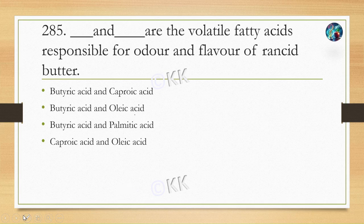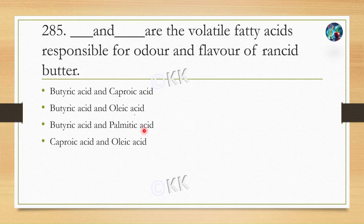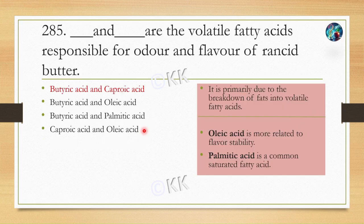Next question: which are the volatile fatty acids responsible for the odor and flavor of rancid butter? Option A butyric acid and caproic acid, option B butyric acid and oleic acid, option C butyric acid and palmitic acid, option D caproic acid and oleic acid. The correct option is option A, butyric acid and caproic acid. These two fatty acids easily break down into volatile fatty acids, giving rancid butter its flavor. Palmitic acid is a common saturated fatty acid.